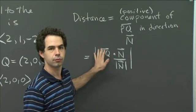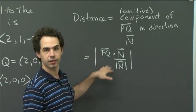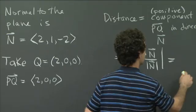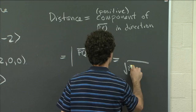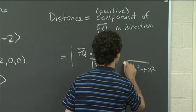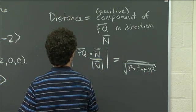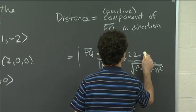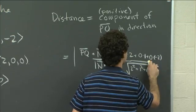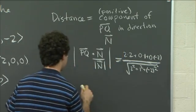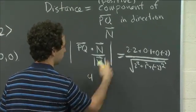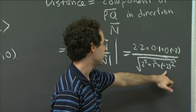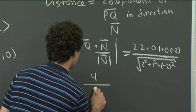We have our vector PQ and our vector n, so we can compute this. We know n = (2, 1, -2), so the length of n is the square root of 2² + 1² + (-2)² = √9 = 3. In the numerator, PQ dot n = 2×2 + 0×1 + 0×(-2) = 4 + 0 + 0 = 4. So the distance is 4/3.